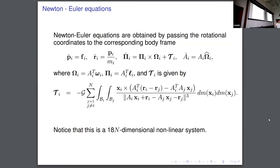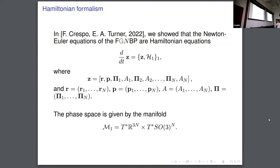We claim, in joint work with one of my students, that this system can be expressed in a Hamiltonian framework. This was done by others for special cases. But we did it for arbitrary orientations. So the previous equations can be expressed in this very compact form. You find the expression of the Hamiltonian with a Poisson structure in which these brackets are given.